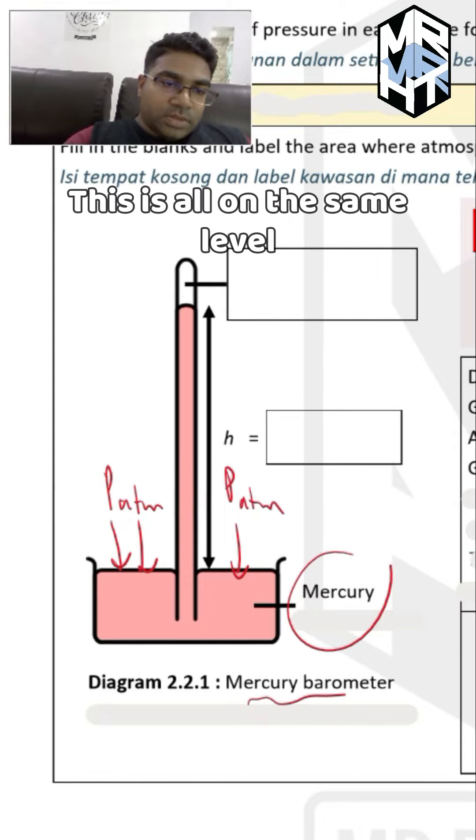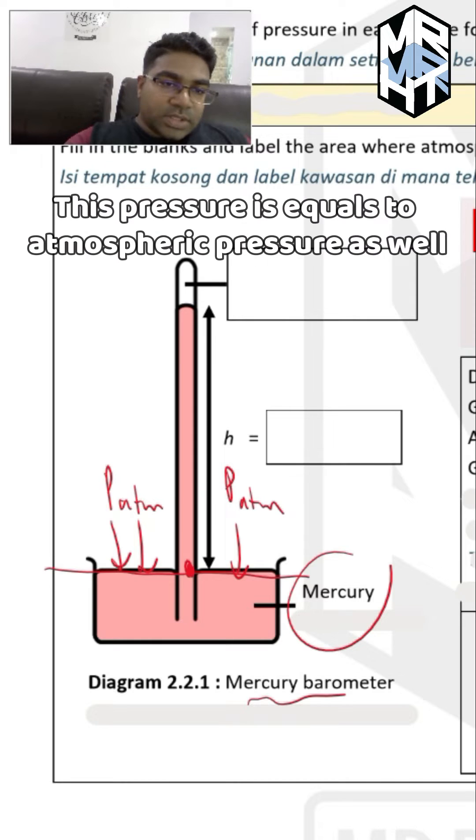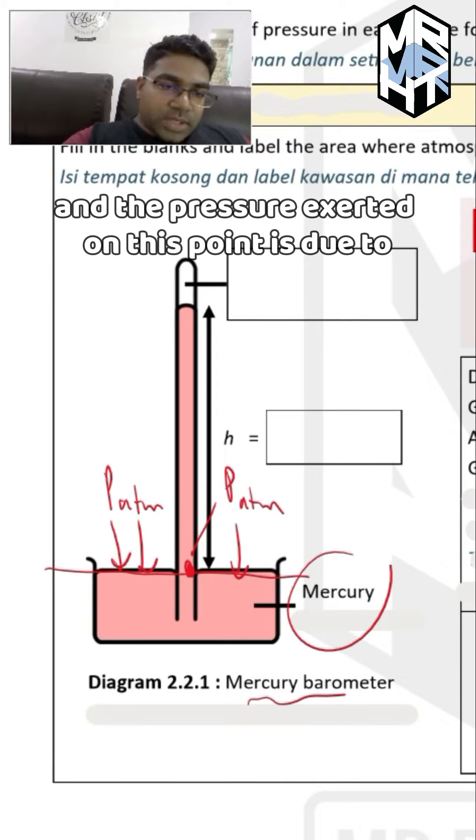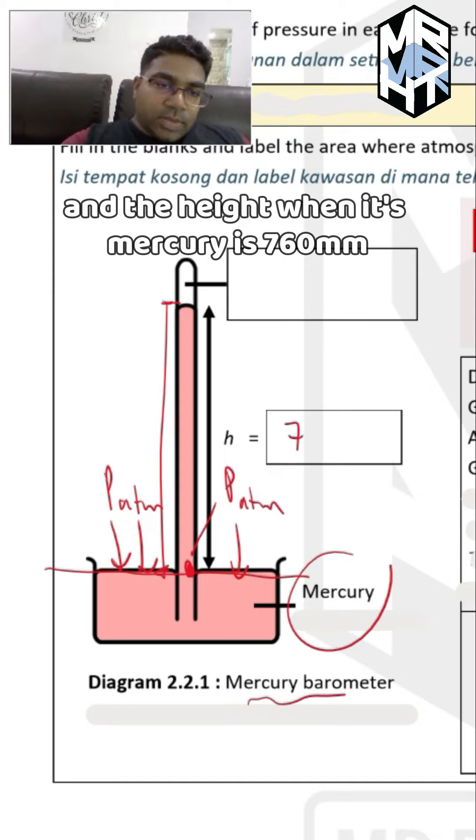However this is all in the same level which means at the center here this pressure is equals to atmospheric pressure as well and the pressure exerted on this point is due to this liquid mercury column and the height when its mercury is 760 mm.